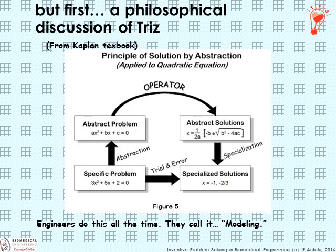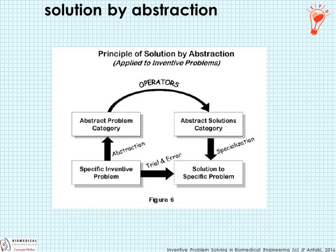This is what engineers do all the time — we call it modeling. It's whenever we apply an equation to a design situation. By analogy, if you have an inventive problem, it can also be solved through trial and error, or it could be recognized as a specific version of a general problem. We can abstract it to a higher level for which a set of solutions may already exist, which can then be applied, specialized, and used to solve your specific problem.